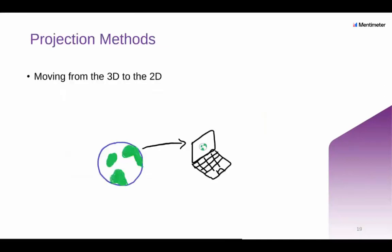Now we have a basic understanding of spatial data — how do we actually pinpoint a location to a map? We have projection methods, and this is how we move from the 3D to the 2D. Map projections try to portray the surface of the Earth on a flat piece of paper or computer screen. So we're trying to move from a spherical shape, that 3D, to a planar shape, that 2D.